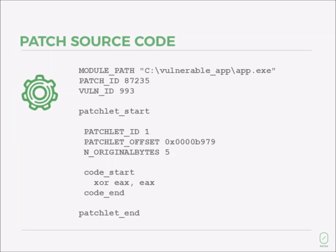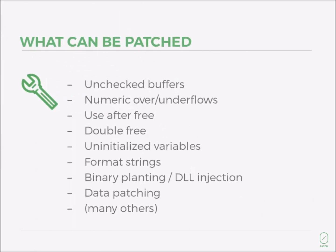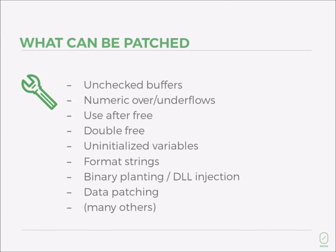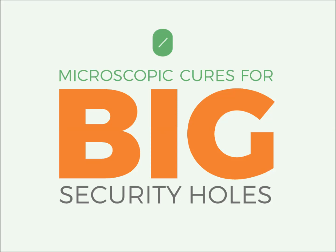This is an actual source code of a patch that initializes an uninitialized variable with a single 2-byte instruction. ZeroPatch can be used to patch virtually any critical vulnerability in native code that can be used in a real attack. It is however not ideal for fixing design flaws and scripted code. ZeroPatch: microscopic cures for big security holes.